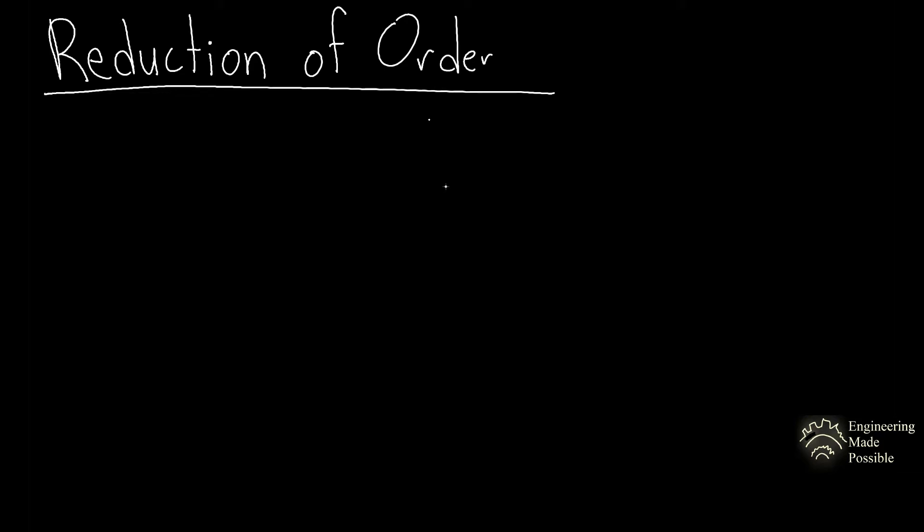The two functions — first the original function given as a solution of the differential equation, then the second solution found using reduction of order — will be linearly independent. Therefore, the general solution is just the addition of these with the arbitrary constants, as seen in the other video on linear dependence and independence.